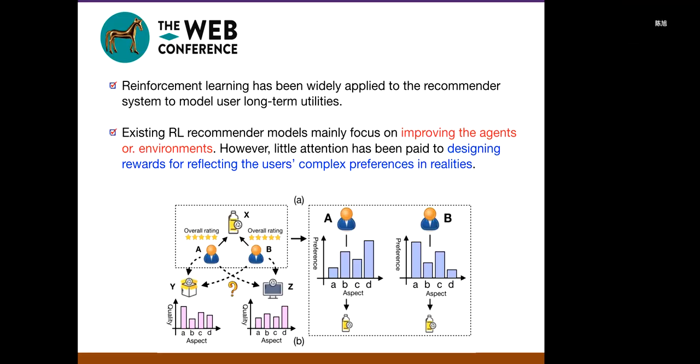Recommendation systems, as an effective remedy for information overloading, have been widely applied in a number of real-world applications, ranging from e-commerce, social networks, music radio, and house covering. Traditional models usually solve the recommendation task within the supervised learning framework. However, this framework cannot handle the basically interactive nature between the user and the system, and cannot model users' long-term engagement.